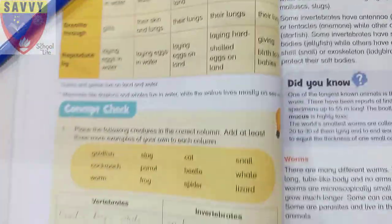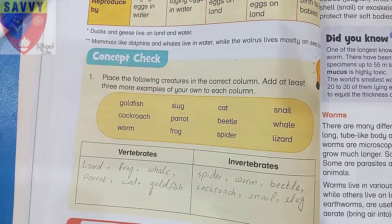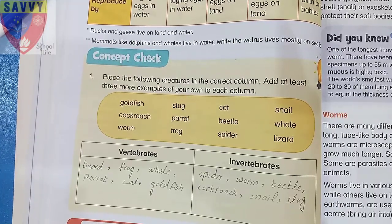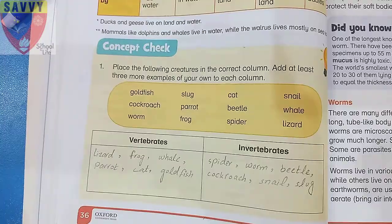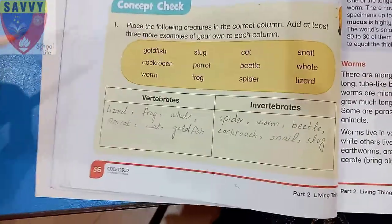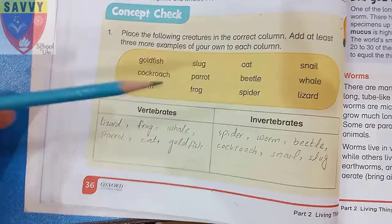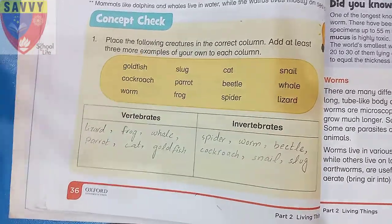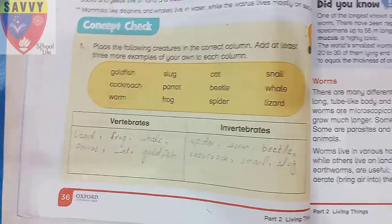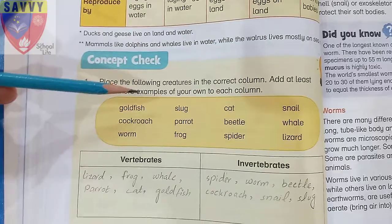Concept check: place the following creatures in the correct column — vertebrates or invertebrates — and add at least three more examples to each column. Word bank: lizard, frog, whale, parrot, cat, fish for vertebrates; spider, worm, beetle, cockroach, snail for invertebrates. Students, add at least three more examples of your own to each column.